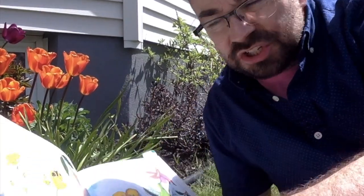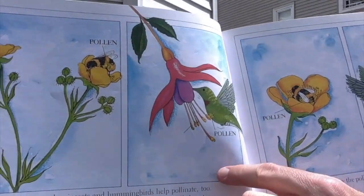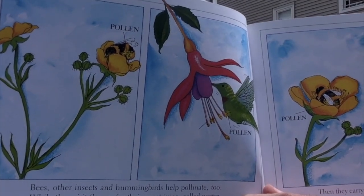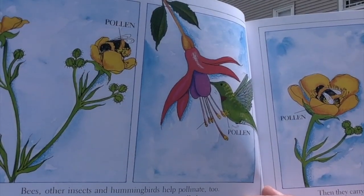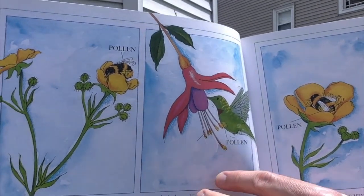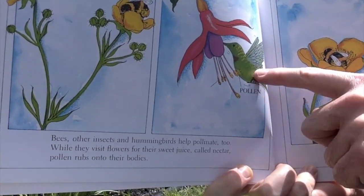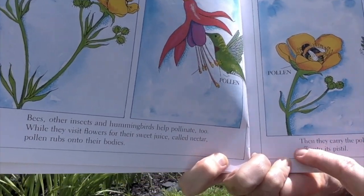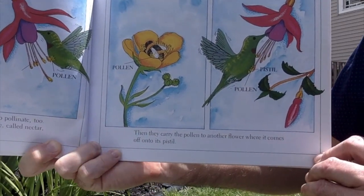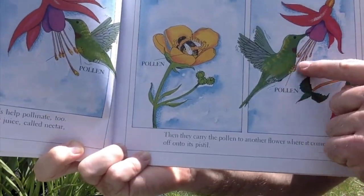Let's find out how the pollination continues. Bees, other insects, and hummingbirds help pollinate too. While they visit flowers for their sweet juice called nectar, pollen rubs onto their bodies. Here's a bee inside a flower with some pollen, and a hummingbird with pollen. Then they carry the pollen to another flower where it comes off onto its pistil.